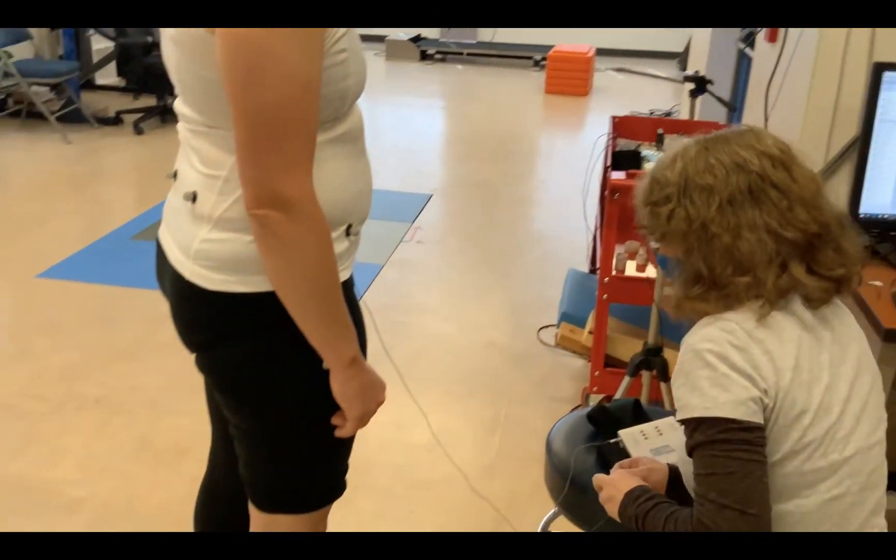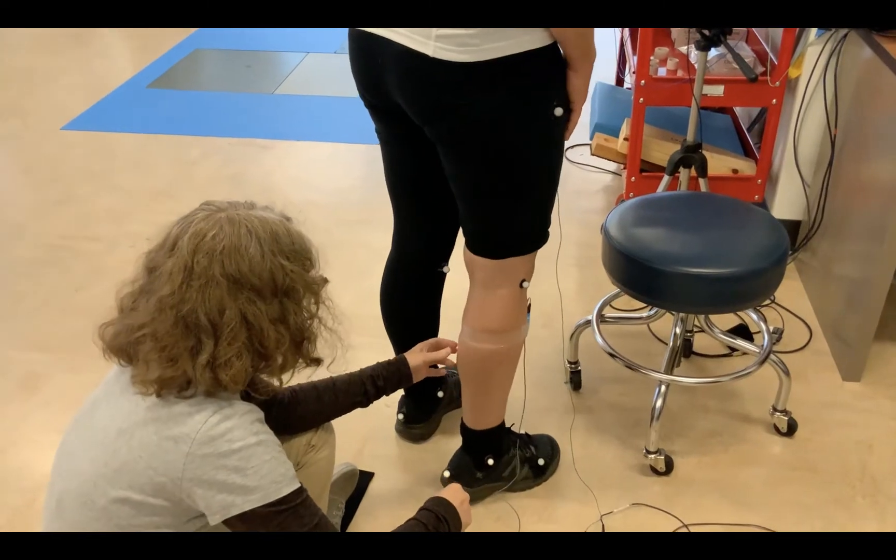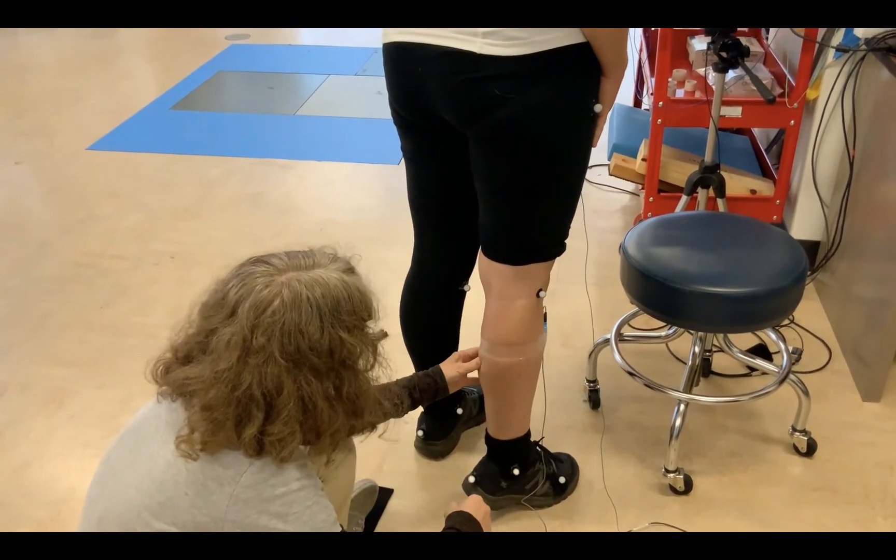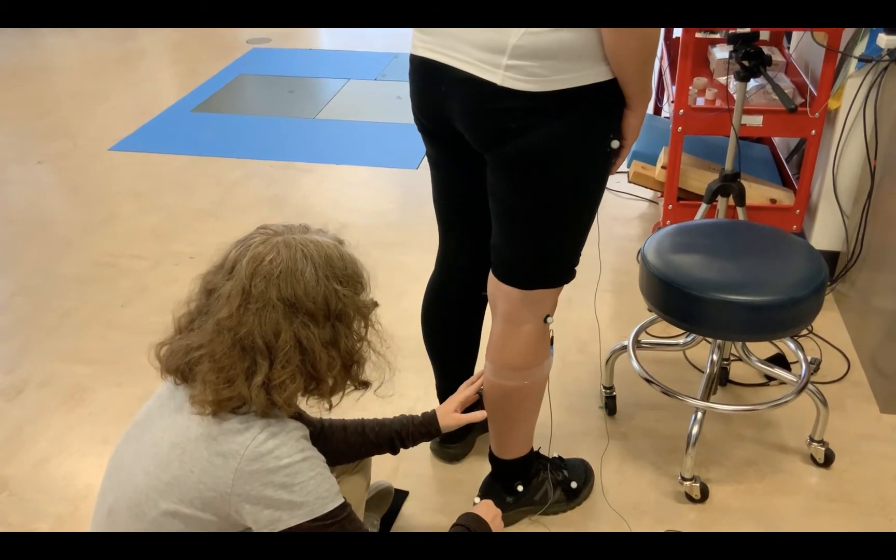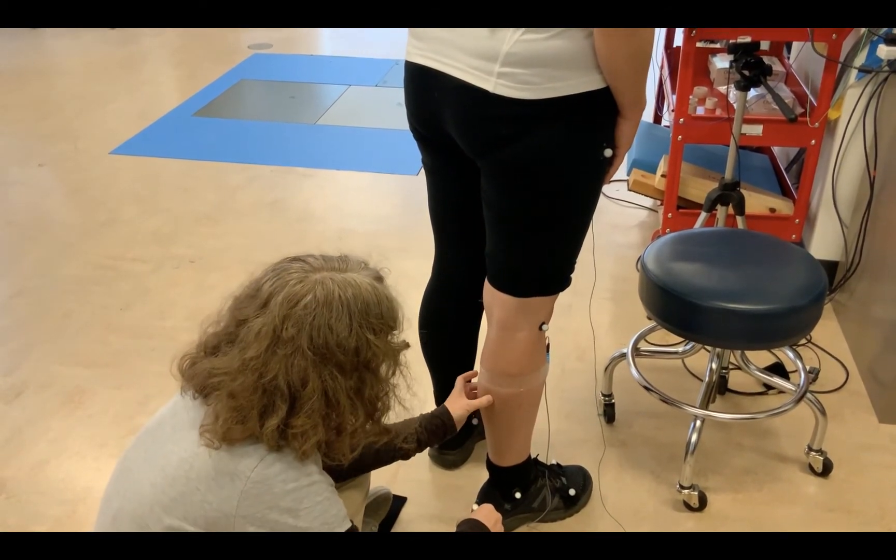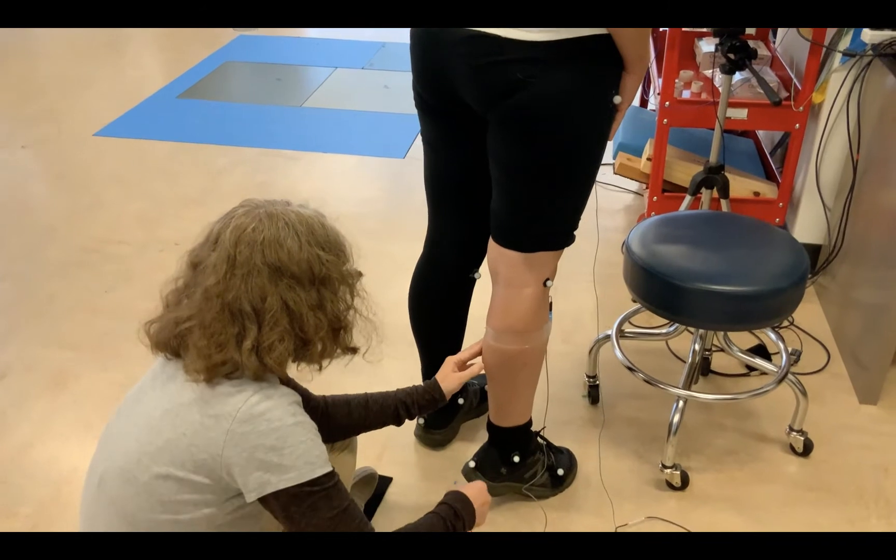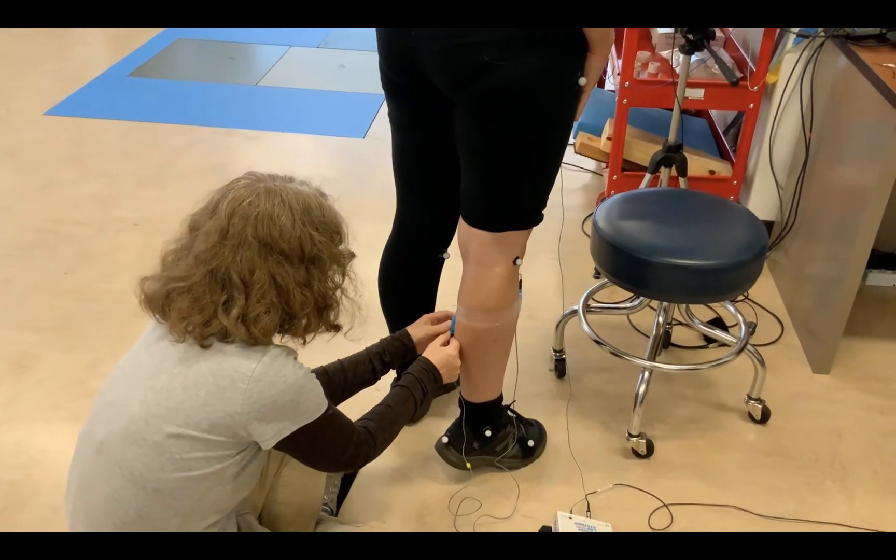If you're going to do gait analysis, two of the biggest muscles involved are the tibialis anterior and the gastrocnemius, the calf muscle. So again, the subject is doing a toe raise and the experimenter is palpating the muscle belly of the calf and placing the EMG sensor on the muscle belly of the calf.